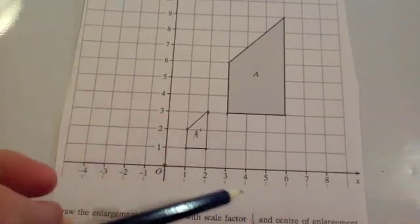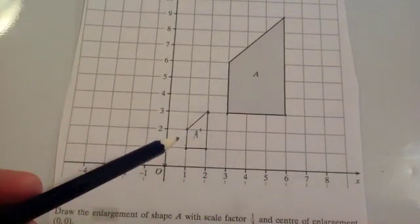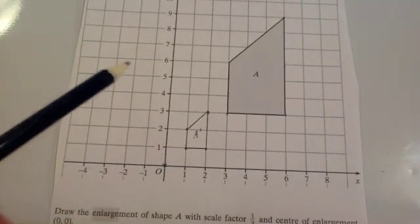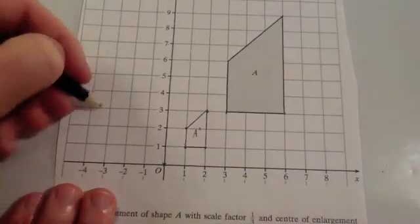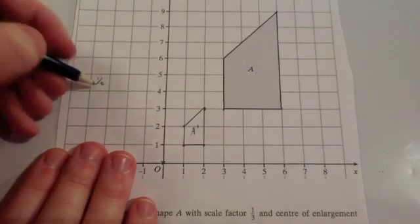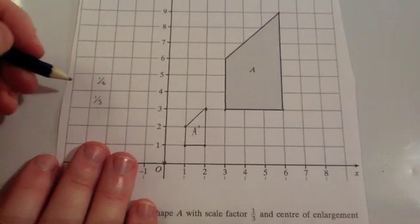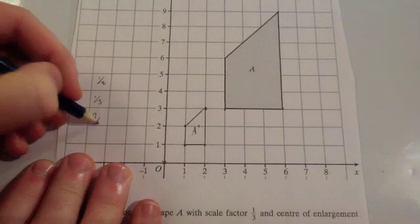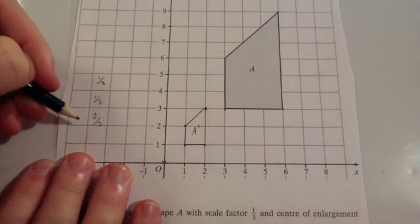So the main thing is, whenever you've got a fractional scale factor less than 1, the shape will get smaller. And you just divide the distances by 2 or by 3 or whatever the fraction is. So if the fraction was something like, if the scale factor of enlargement was a half, you would half all the distances. If the scale factor is a third, you divide all the distances by 3. If it was something like 2 thirds, you would work out 2 thirds of the distances, and so on.